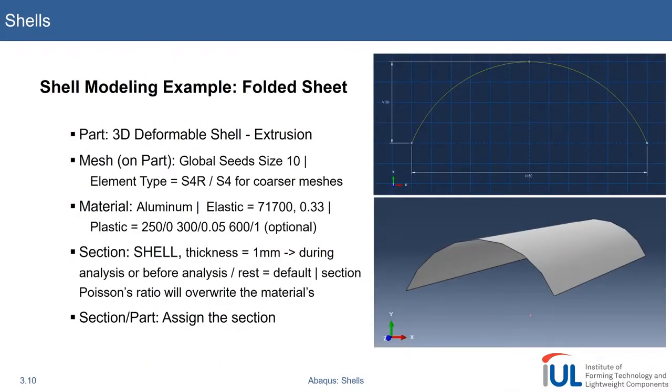I want to introduce the shell modeling example. We will basically fold a sheet. We will not fold anything else, but we will start with a sheet of dimension 60 by 20 and with a depth of 200.